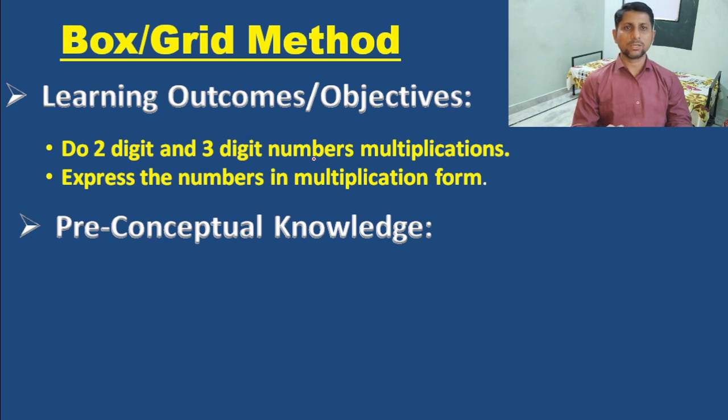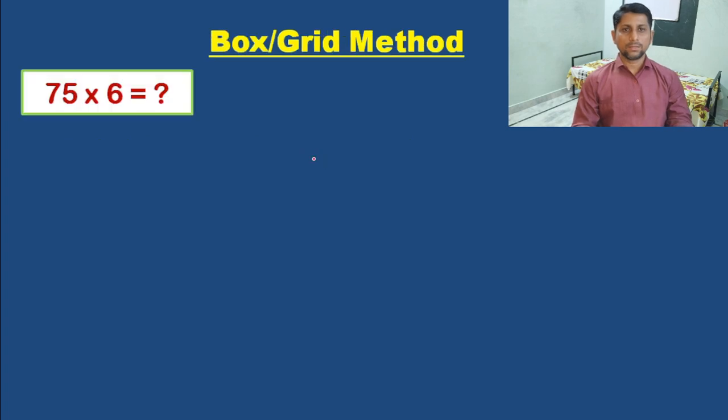Think about the pre-conceptual knowledge - these are prerequisites. To explain any new concept, students should know some kind of prerequisites or pre-conceptual knowledge to understand the new concept. For this topic, I recommend 20 prerequisites. Just think about what kind of prerequisites students should have to learn this box or grid method multiplication. Think and write your answer in the comment box. We will discuss your comments in my coming videos.